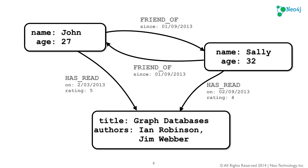In a graph database, traversals are very important to the performance advantage you get over a relational database. In this property graph data model, you can traverse from one node to another — I call it walking the graph. If I started at John and wanted to get all of John's friends, I would just walk the graph over to Sally. If I wanted to see all the books John has read, I'd walk the graph over to the Graph Databases book.